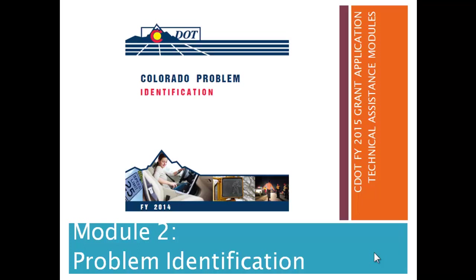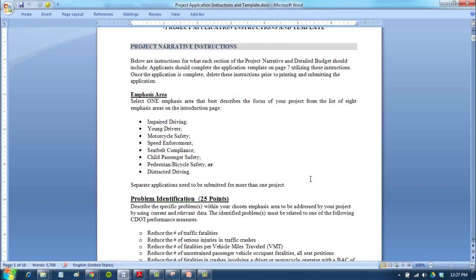They were mentioning that their three main focus areas are unrestrained fatalities, impaired driving fatalities, and speeding-related fatalities. I think maybe we should look at our section of the problem identification report for Fayette County and see what the data says. I did hear that they're really putting a big emphasis on this problem identification section, and if we're not able to make a strong enough case for our project, CDOT's not even going to send it to the grant reviewers to actually be scored.